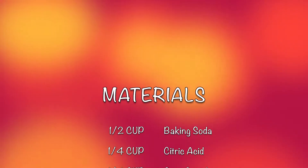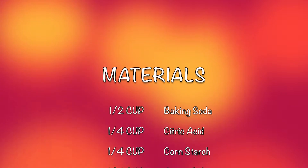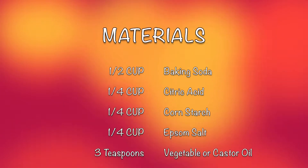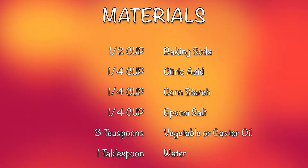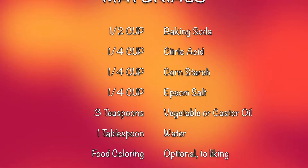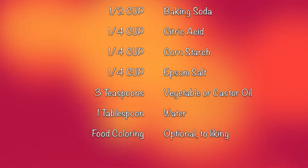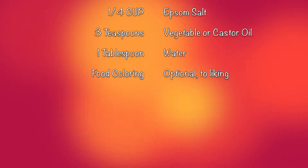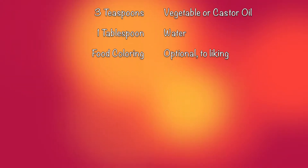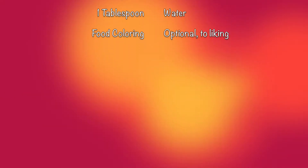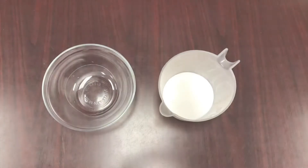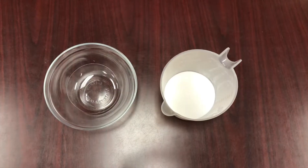Half cup of baking soda, one-fourth cup of citric acid, one-fourth cup of cornstarch, one-fourth cup of Epsom salt, three teaspoons of vegetable or castor oil, one tablespoon of water. Food coloring is optional and to your liking.